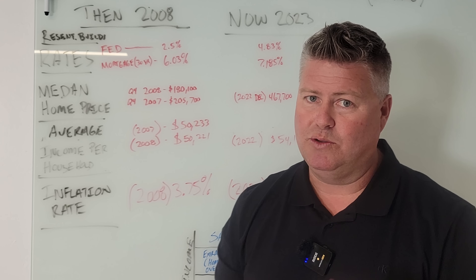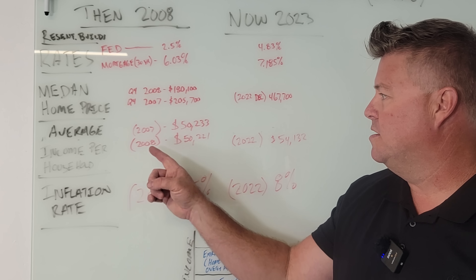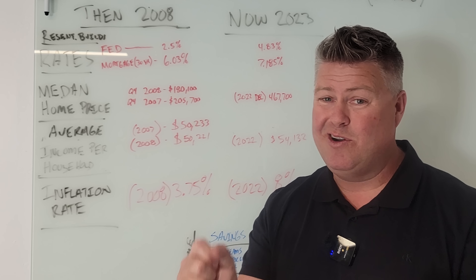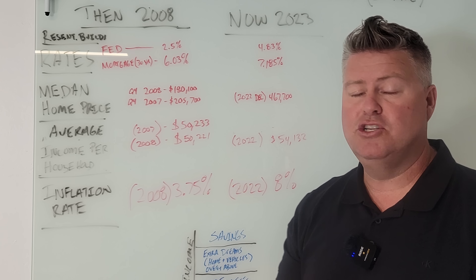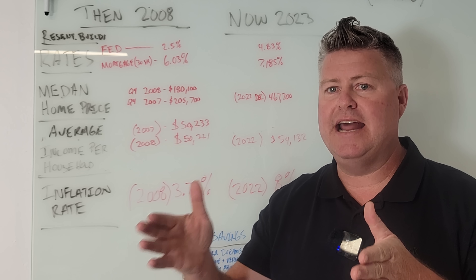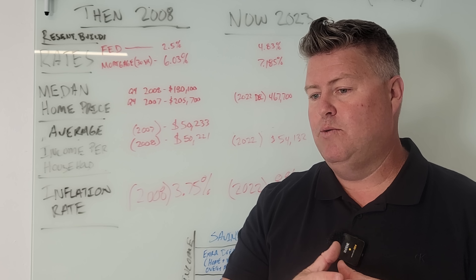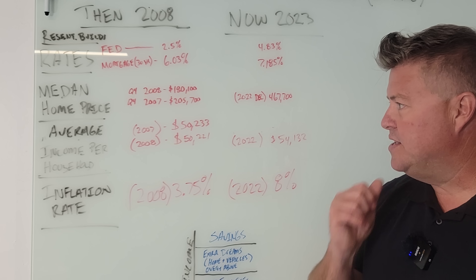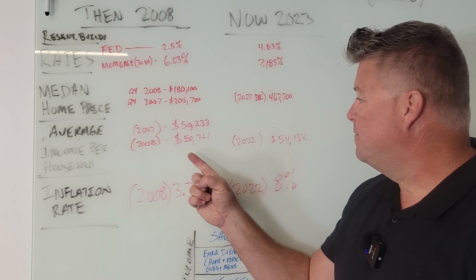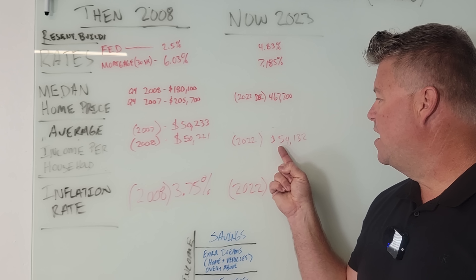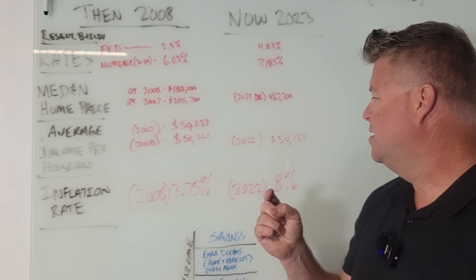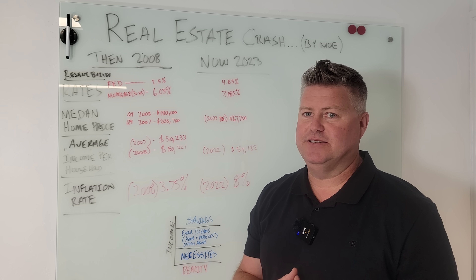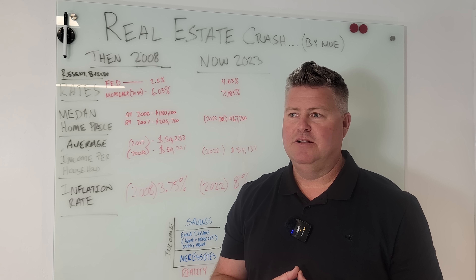Average income per household — this is very important. In 2007 it was $50,233; in 2008 it went down slightly to $50,221. That's where you're seeing that decline: as the recession started in earnest, everything was imploding, people were losing their jobs. Now let's look at 2022 — we went up. From 2008 to 2022, you are now making a little less than $4,000 more a year on average. That doesn't pay the bills. Mo, where is this money coming from?